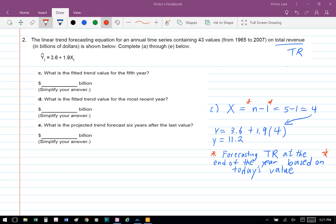In Part C, we're asked to find the fitted trend value for the fifth year. The formula we're going to use here is x equals n minus 1, where n equals 5, so we have 5 minus 1 equals 4. Then we substitute 4 into the equation, so y equals 3.6 plus 1.9 times 4, which gives us y equals 11.2. So 11.2 is the expected total revenue for year 5.